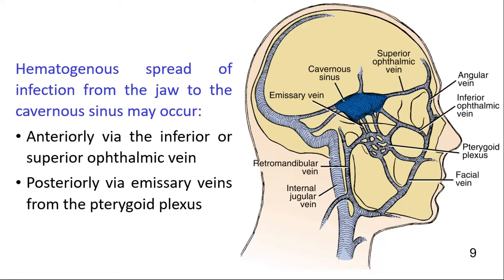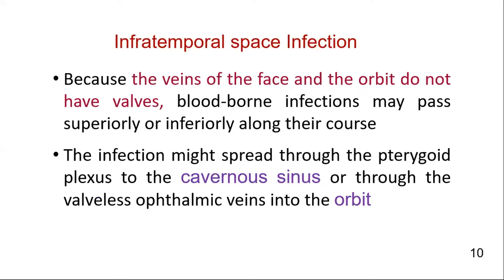Hematogenous spread of infection from the jaw to the cavernous sinus may occur anteriorly via the inferior or superior ophthalmic vein, and posteriorly via emissary veins from the pterygoid plexus. Infections reaching the pterygoid plexus may travel directly to the cavernous sinus because the veins of the head and neck lack valves to prevent retrograde propagation of bacteria.